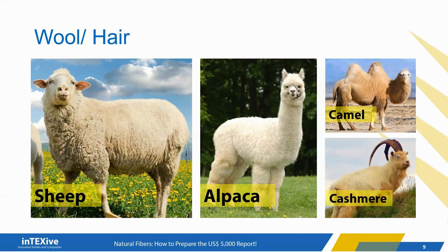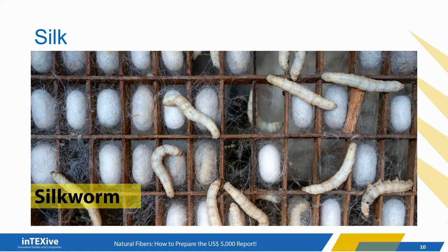And finally, the most guarded secret in human history — silk. Silk can be produced by several insects, but the only commercial variety is produced from the cocoon of the mulberry silkworm, which is mainly cultivated in China. Silk is considered the only natural fiber in a continuous filament form.